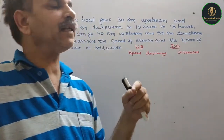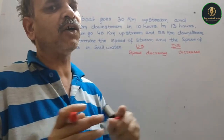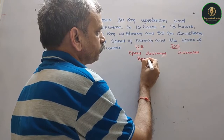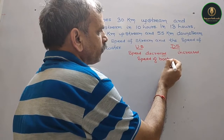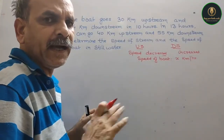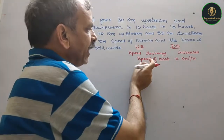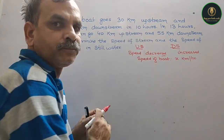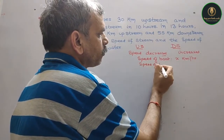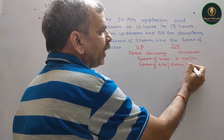So suppose we have taken the speed of the boat as x km per hour in still water — that means without any current, no tide, only still water. And we take the speed of the stream — that means there is a tide — as y km per hour.